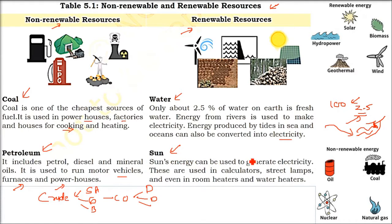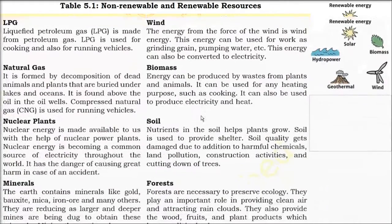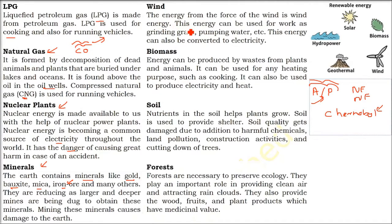The sun is almighty — every day we wake up with it. Solar energy can be used for electricity, running calculators, street lamps, room heaters, and water heaters. Wind is also very powerful — it can be used for grinding grain, pumping water, and can be converted to electricity using windmills. Biomass is everything living; when it dies, it produces biomass energy that can be used for cooking, electricity, and heat.